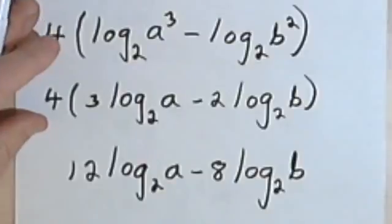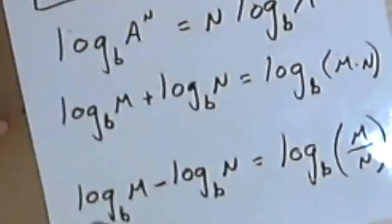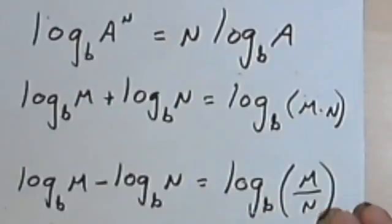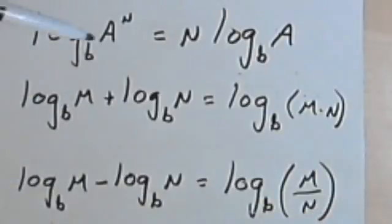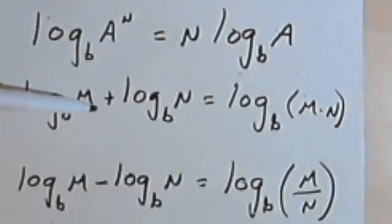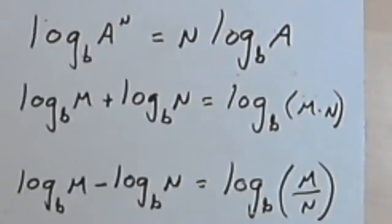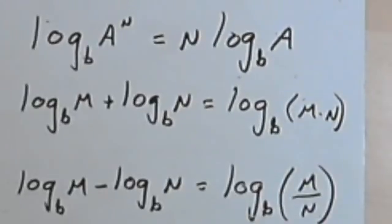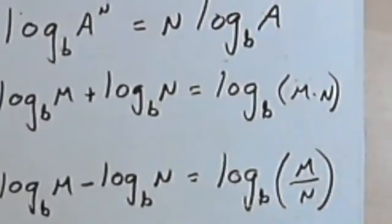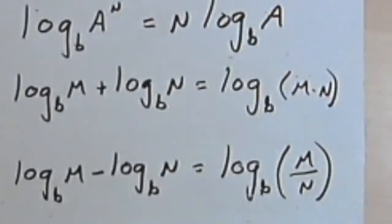What this comes down to, ultimately, is just making sure that you've got these three basic properties memorized and you understand them: the power property, the product property, and the quotient property. Once you're sure you understand them, try some exercises where you apply those rules, and you should end up with a rewritten expression which means exactly the same thing as the one you started with. Take care, I'll see you next time.